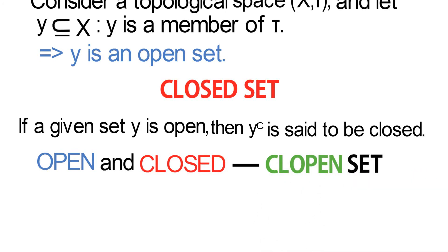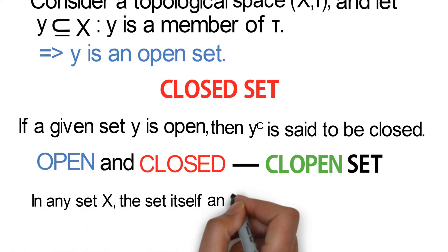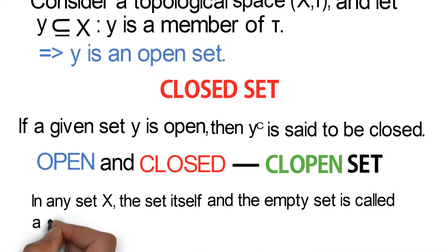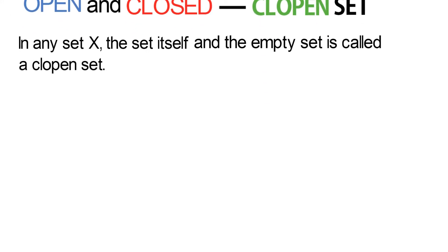So in general, in any set X, the set itself and the empty set is called a clopen set. We will see an example of this as we go further. So let's take some examples to understand the concept of open and closed sets.